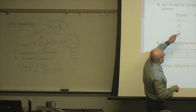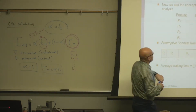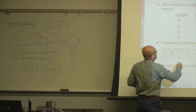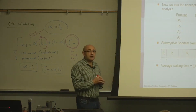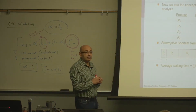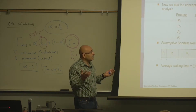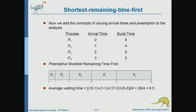At time zero, you have these processes with their arrival times. At time zero, how many processes are in the ready queue? One — only one process. So that makes it easy. The system has no choice, because at time zero the other processes have not arrived yet, so the system will just give the CPU to P1. Only one choice.